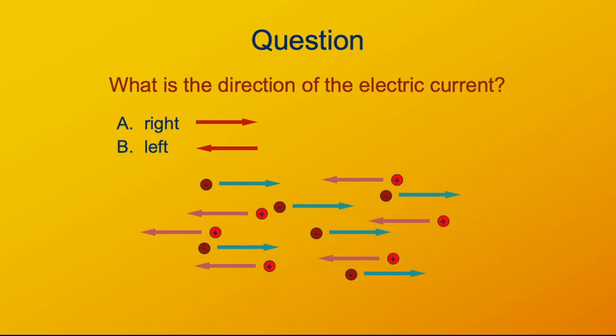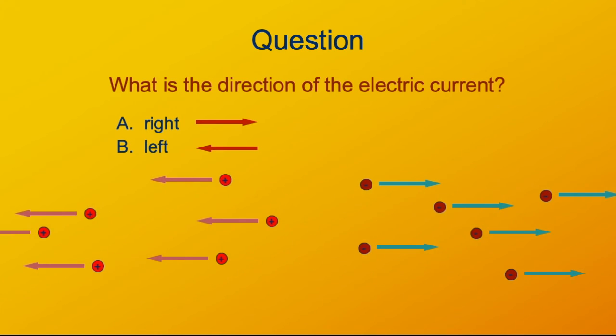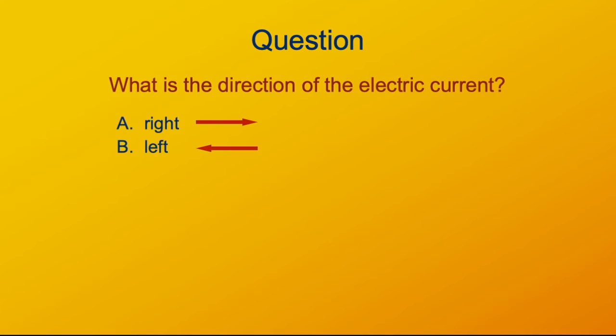In this particular simulation, we see charges moving in different directions. The direction of the current is to the left. Positive charge moving to the left — that's the way that the charge is flowing. The negative charge moving to the right is essentially the same thing as building up positive charge density on the left. So either one of those — positive charge moving to the left or negative charge moving to the right — makes a current to the left.